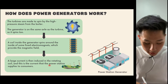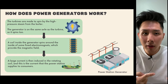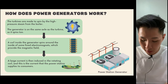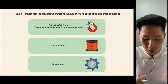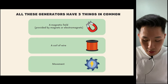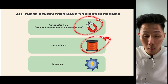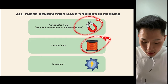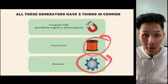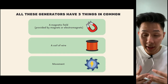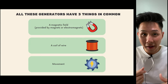Electricity is then transferred from the power station to consumers. All generators, regardless of type, have three things in common: they need magnets to provide the magnetic field, a coil of wire so that current can be induced, and movement — usually provided by steam in a power station, by a hydroelectric dam, or by a bicycle tire moving.